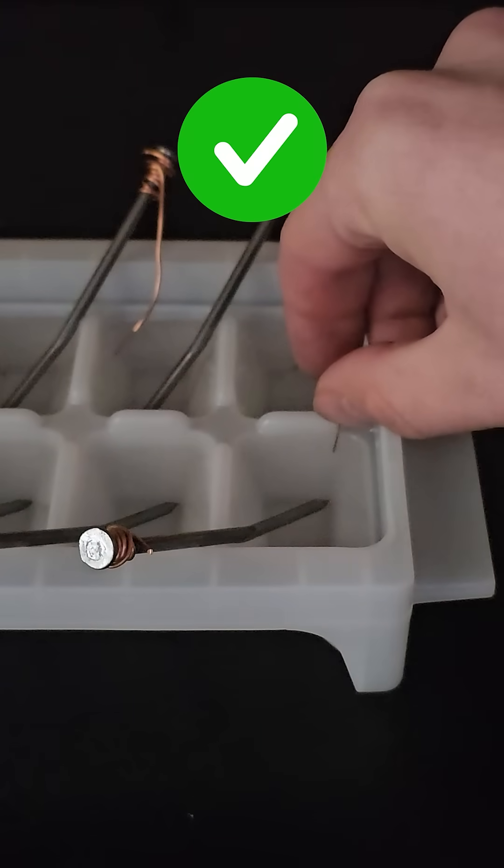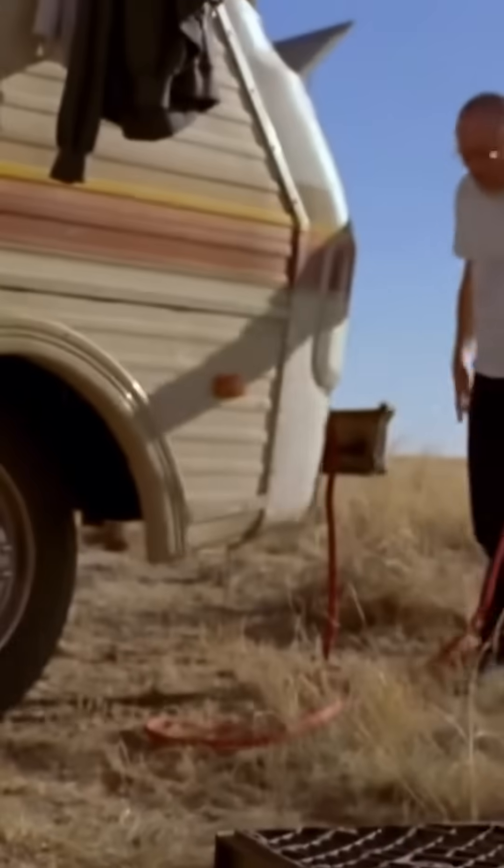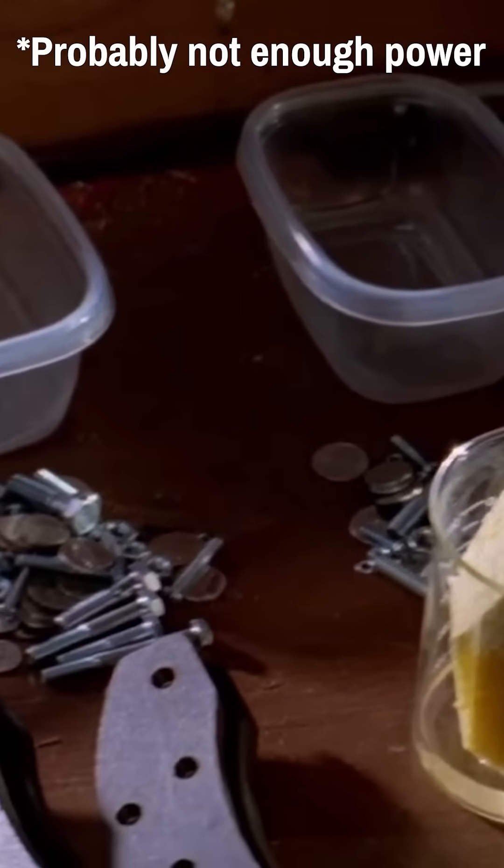Nails, copper wire, and vinegar can be used to create a battery and light up an LED. Walter White famously made a similar battery to jumpstart his RV, although it's up for debate whether this would have actually worked the way he did it.